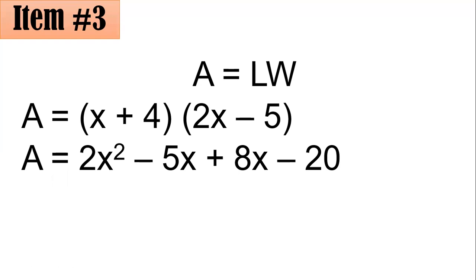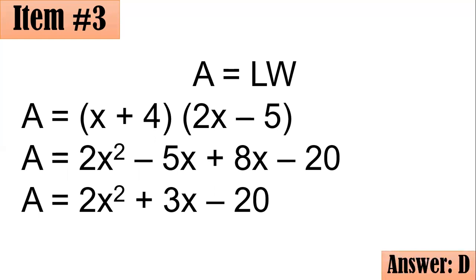And for such, the 2x squared and the negative 20 could be copied. Whereas, the negative 5x and the plus 8x could be simplified into plus 3x. Hence, the answer to this expression here is 2x squared plus 3x minus 20. And this is the area of the rectangle in square units. Letter D.